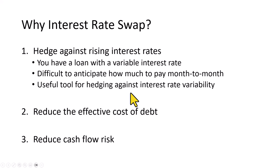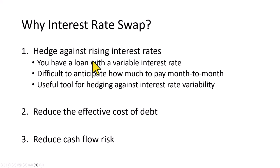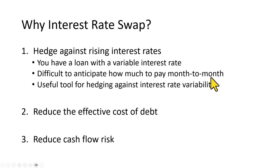There are at least three reasons why a financial institution like a bank would engage in an interest rate swap. The first is to protect against rising interest rates. You can imagine what happens if you have a loan with variable interest rates — it's going to be difficult to anticipate how much you're going to have to pay from month to month. A useful tool for hedging against such interest rate uncertainty is interest rate swap.